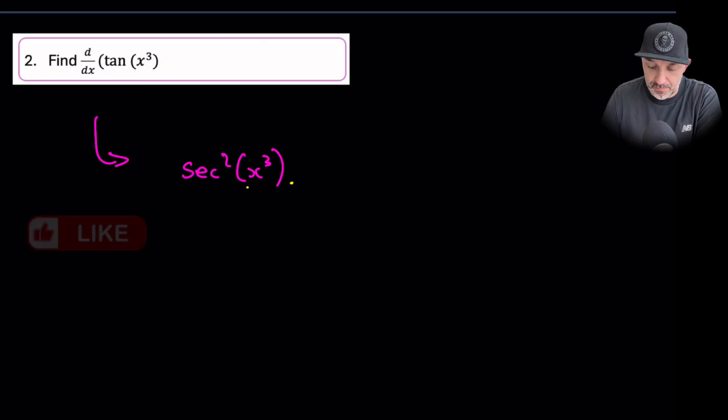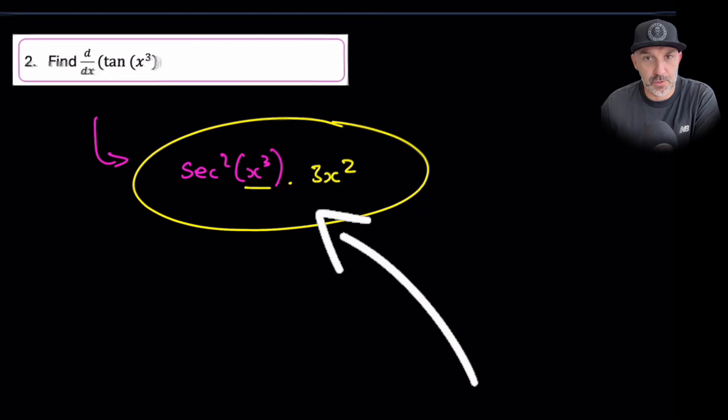But then we must multiply by the derivative of this. So the derivative of this is just 3x squared. And that is the end of the question, if we don't need to substitute a value in.